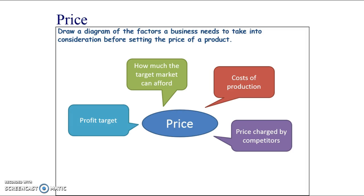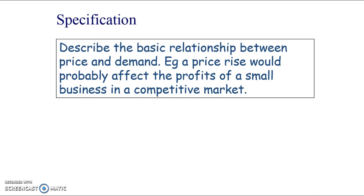You might also have a certain amount of profit in mind that you want to generate, and that can determine the price. We look at pricing strategies in more detail in unit two — things like penetration pricing, price skimming, loss leader pricing, competitive pricing, and cost plus pricing. For example, if you're introducing a new product to the market, you might set a really low price to attract customers, and those are the specification objectives too.